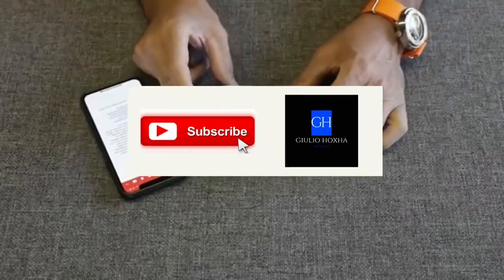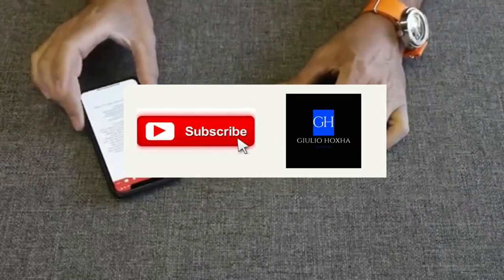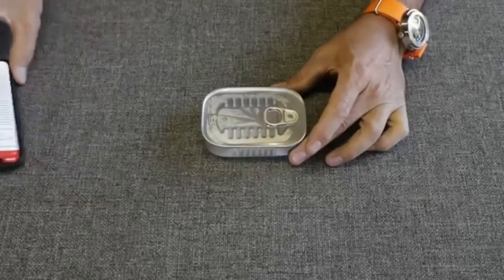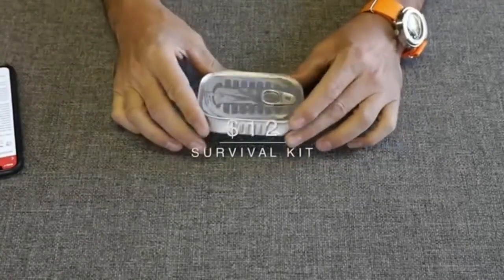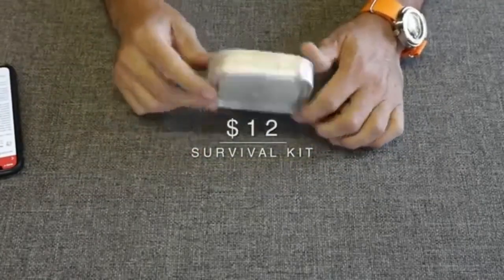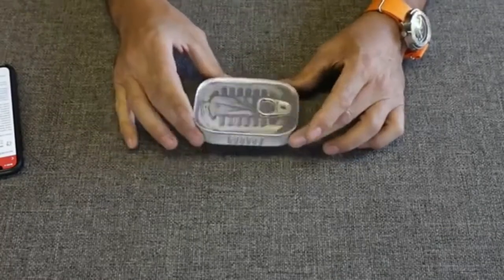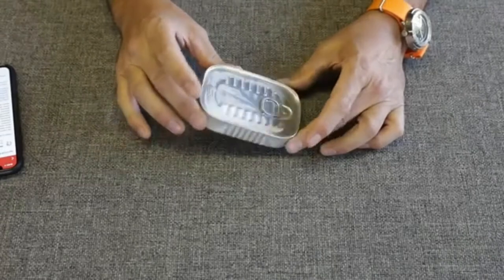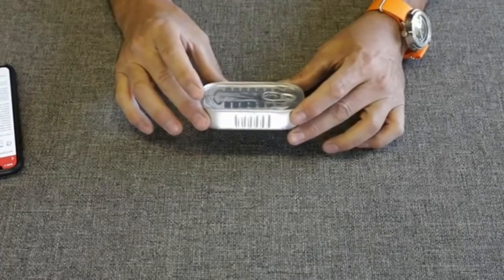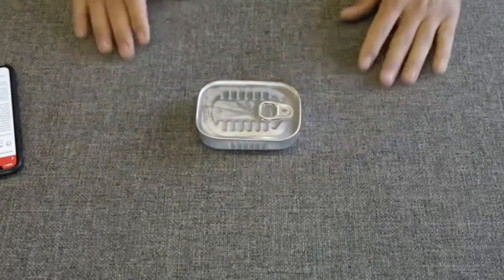Welcome back, friends. This is a video that was requested by my subscriber by the name of Elliot. He said that he had come across a tuna can or a sardine can survival kit on Amazon and wanted me to do a cheapest survival kit review on Amazon video. So that's what we're going to do today.